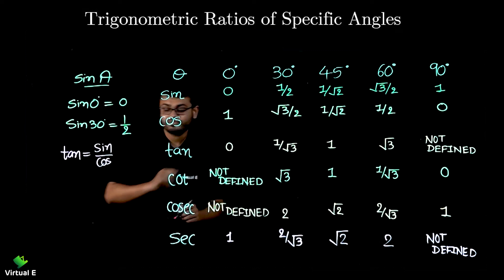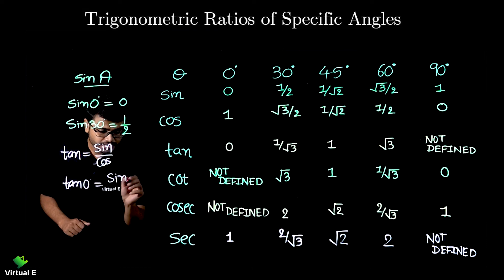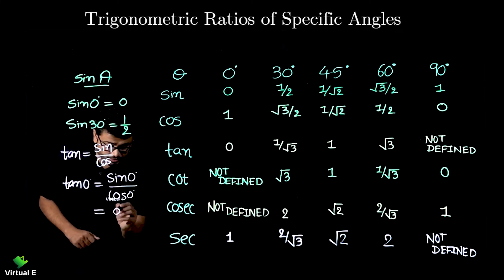If you remember this one then it will be easy. Let's do it. If I want to get the value of tan 0 degree, it is equal to sine 0 degree over cos 0 degree. Sine 0 degree is 0 and cos 0 degree is 1, so what's the value? 0.